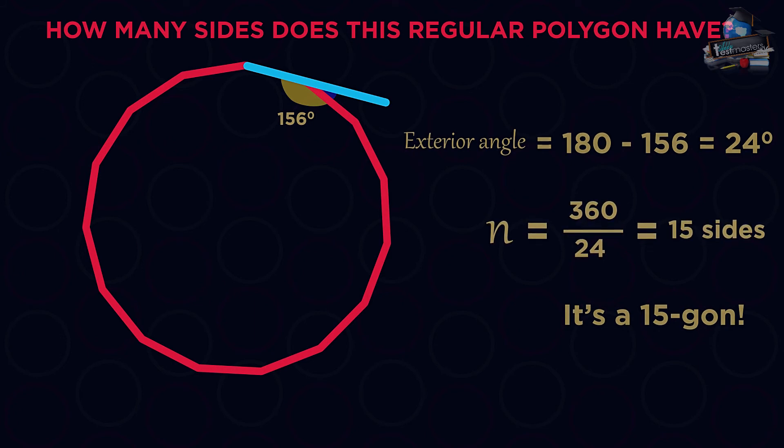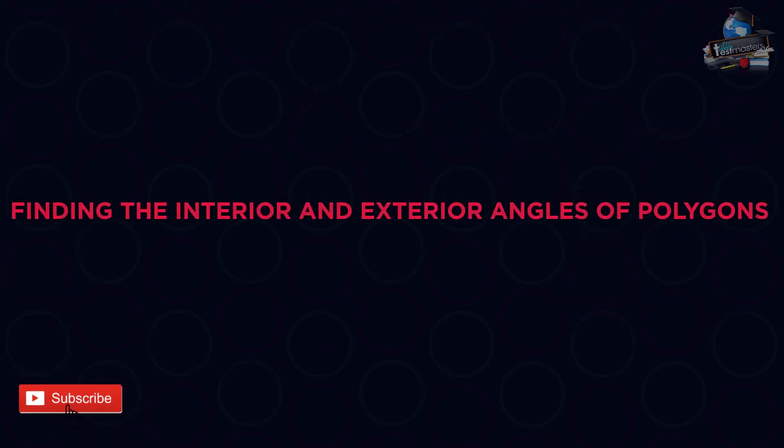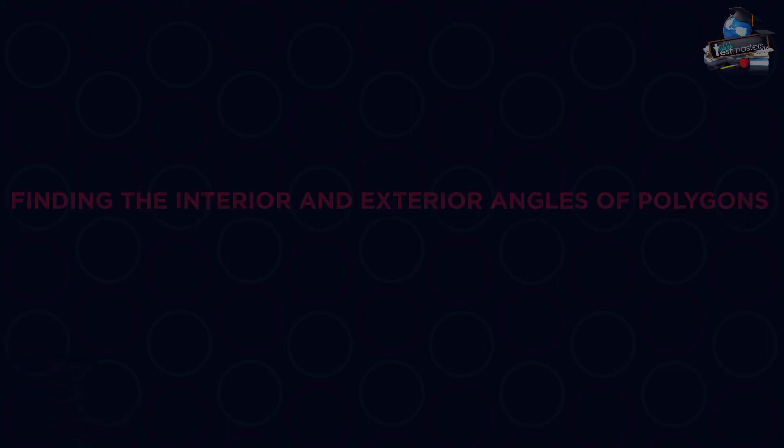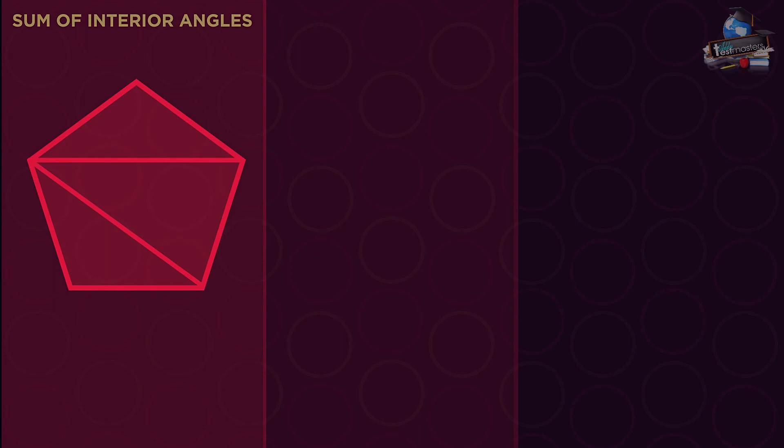So there we have finding the interior and exterior angles of polygons. For the sum of interior angles, you subtract 2 from the number of sides and multiply it by 180. You can always fit two less triangles in.